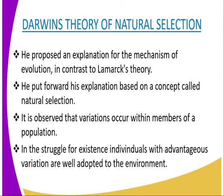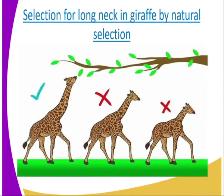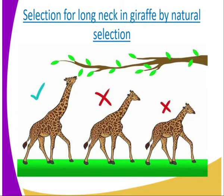In the struggle for existence, individuals with advantageous variations are well adapted to the environment. For example, we can have the giraffes — since they are suitable to the environment, they are selected for, hence survive and reproduce. Those that are poorly adapted perish and do not transmit their characteristics. This is called survival of the fittest. In our diagrammatic presentation, the short-necked giraffes, lacking food, will eventually die because they cannot reach the twigs. But the long-necked giraffe will be able to reach the leaves and reproduce, so its successive generations will have long necks.